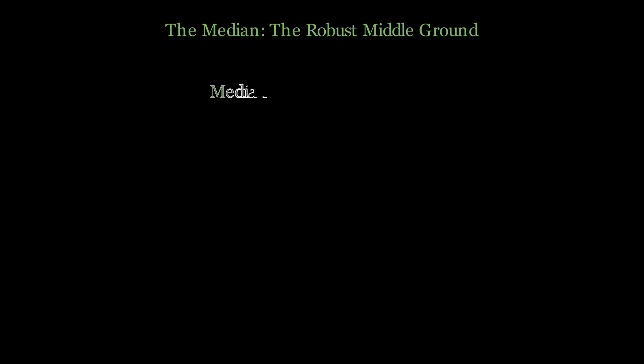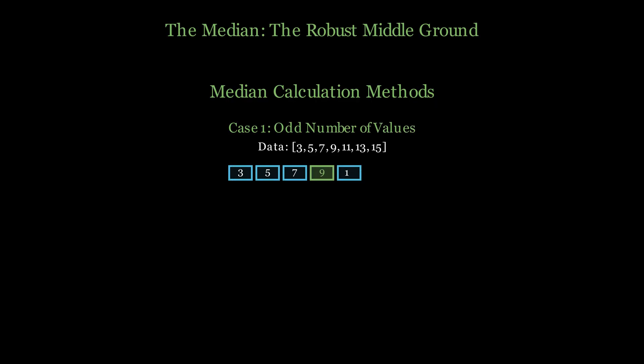Let's master median calculation with two scenarios. First, when we have an odd number of values, like these seven data points, we use the formula: Position equals (n plus 1) divided by 2. That gives us position 4, so our median is 9, the fourth value in our ordered sequence. Notice how we've highlighted the middle position—this value has exactly three values below it and three values above it, perfectly dividing our data in half.